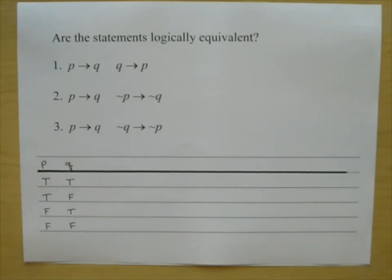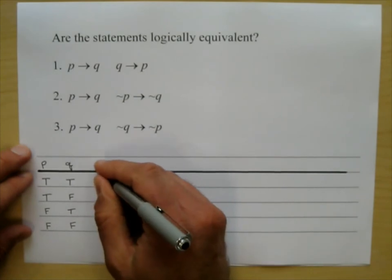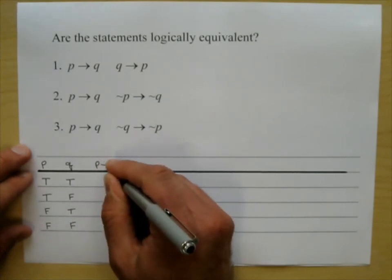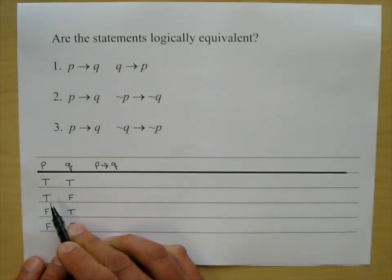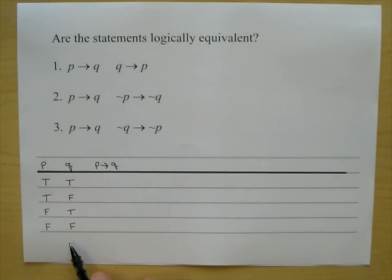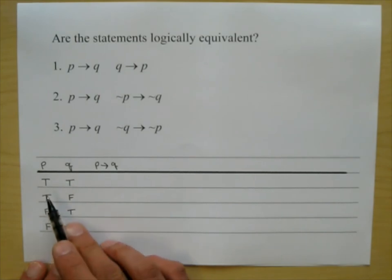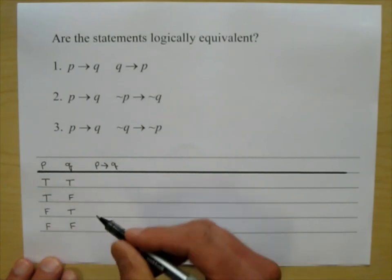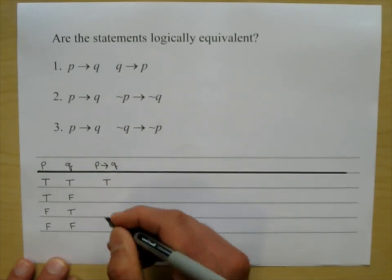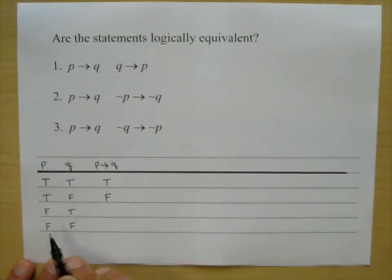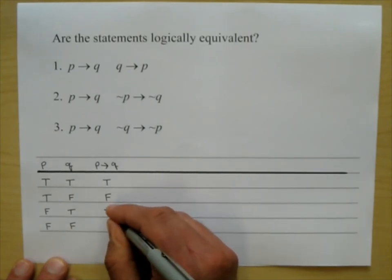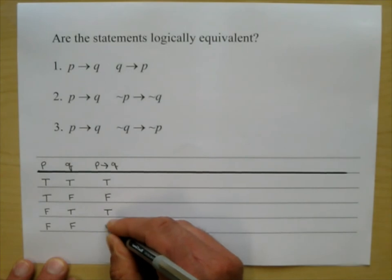Now let's fill in 'if P then Q.' If true then true is true. If true then false is false. The ones that start with 'if false' are going to be true. If false then true is true, and if false then false is also true. This is what we learned in the last section.